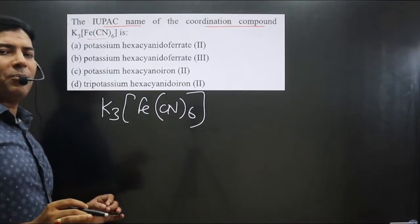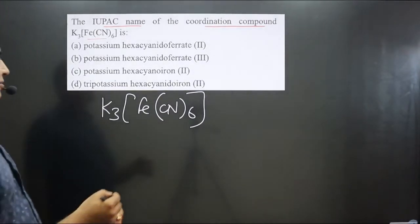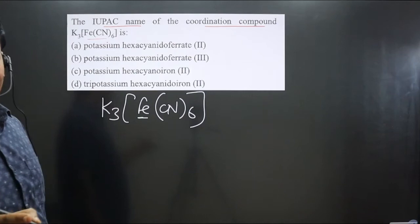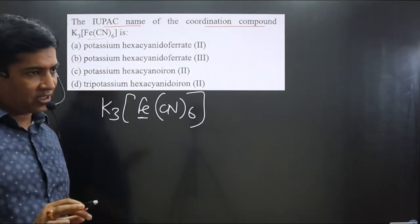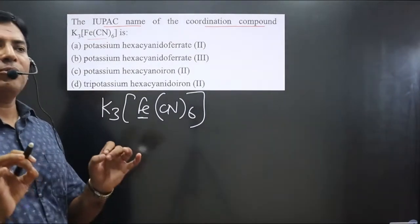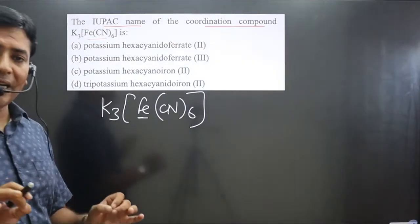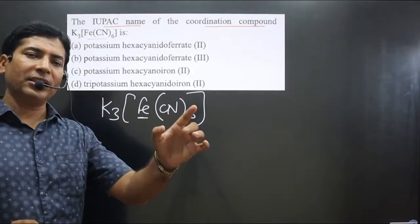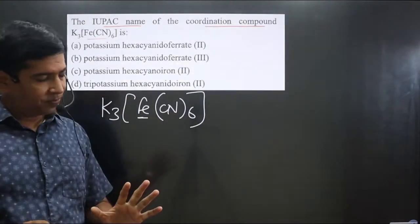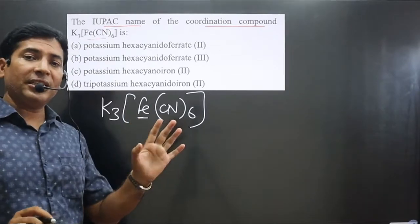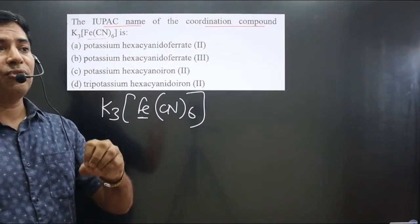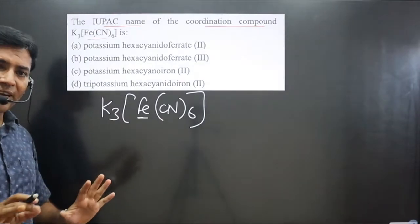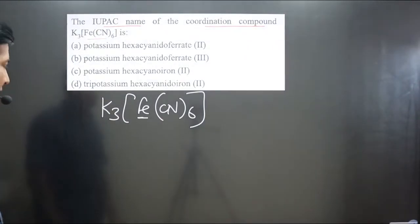Before naming the complex, always identify if the central element is present in the cationic complex or in the anionic complex. If the central element is present in the cationic portion, we use its common name as given in the periodic table. If it is present in the anionic portion, we use its special name. So first we identify cationic as well as anionic.